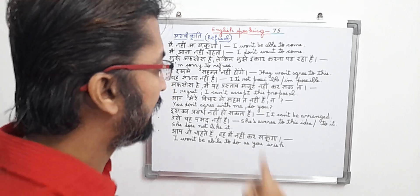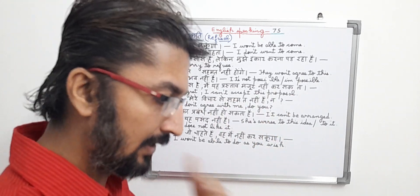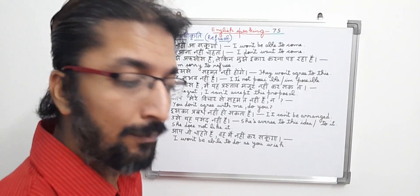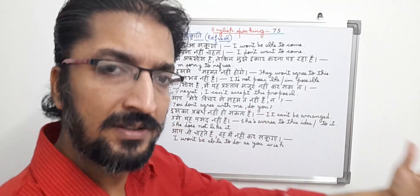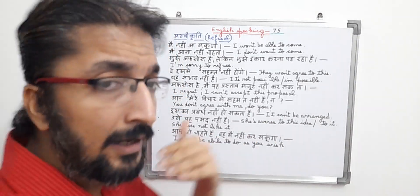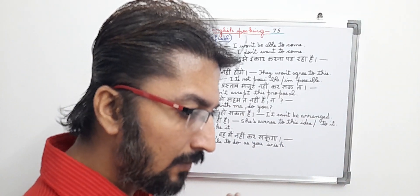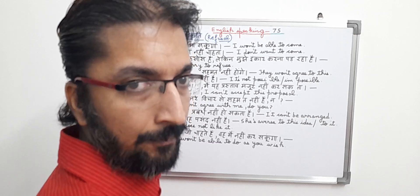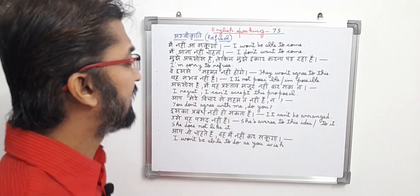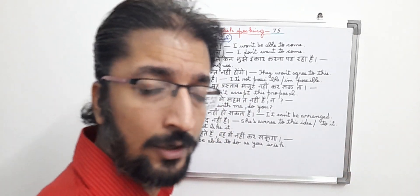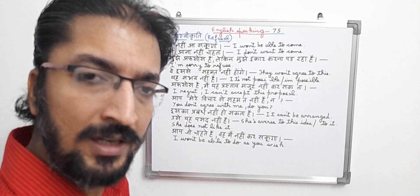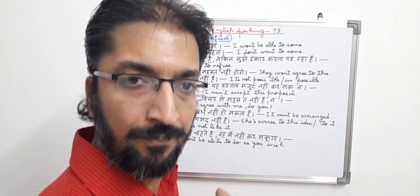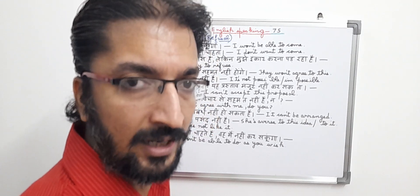In English, it means: they won't agree to this. The sentence basically means that some other persons won't agree to something — there is something going on, but they are not agreeing to it. This is clearly a refusal type sentence because the other persons are not ready to accept that thing.